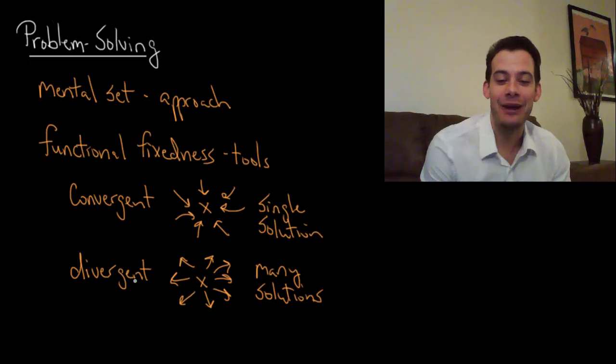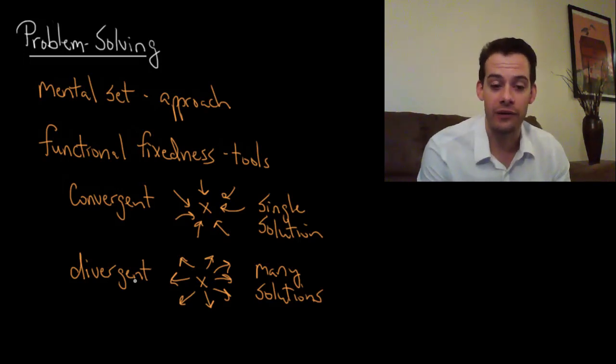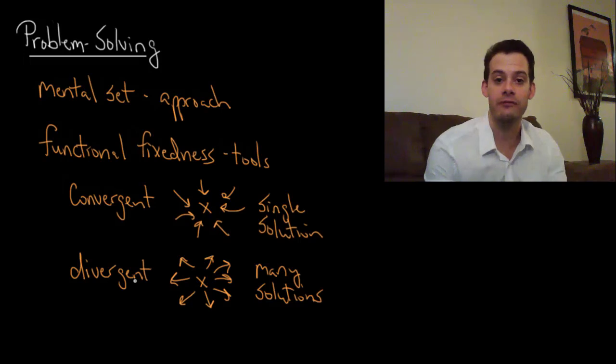But anyway this shows us that we have multiple different solutions to a problem and they're not related to one another and so this creativity comes from this divergent thinking trying to come up with new unrelated solutions and this is something we might not do as often as you know the convergent thinking where we're focused on finding a single solution to a single problem.